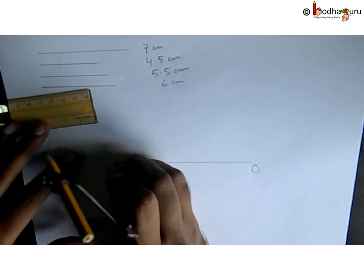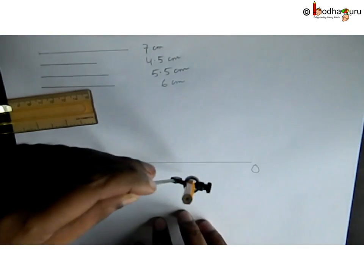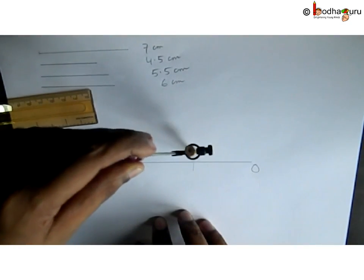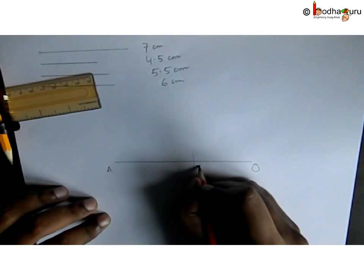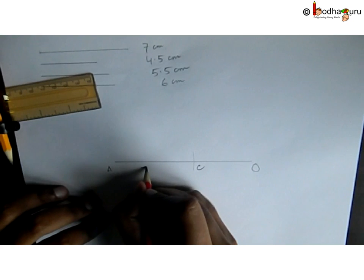This will be AC 7 centimeter and this will be our diagonal for the quadrilateral.